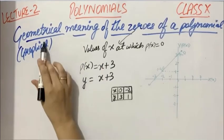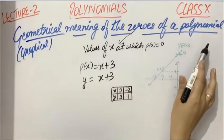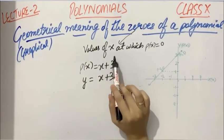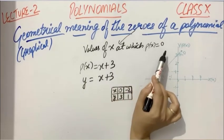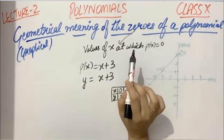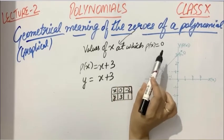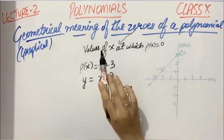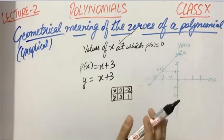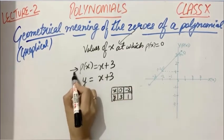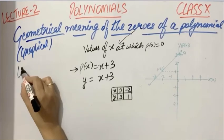Now our next topic is geometrical meaning of the zeros of a polynomial. Zeros means values of x at which the polynomial attains the value 0. As you saw in the algebraic method, to find zeros we directly set the polynomial equal to 0 and find x values. Now let's see graphically how zeros are found out. Here I've considered a linear polynomial.